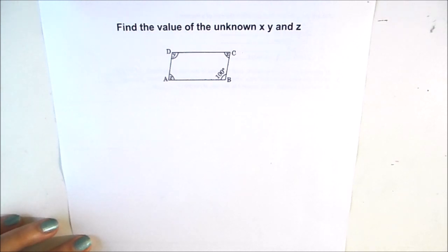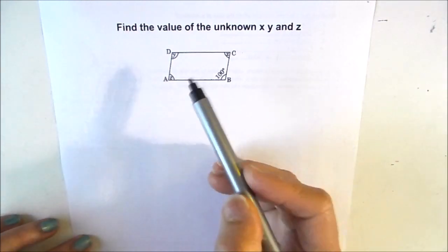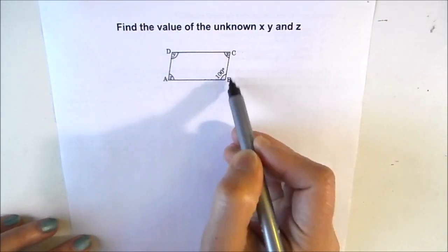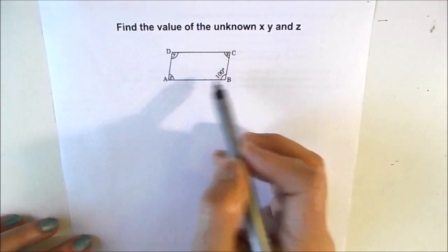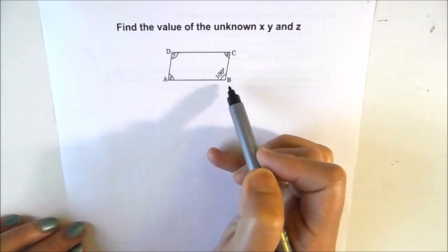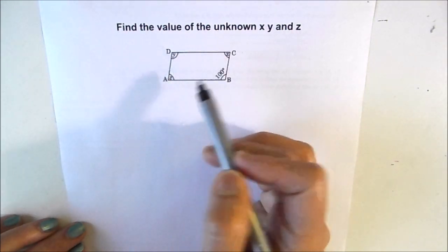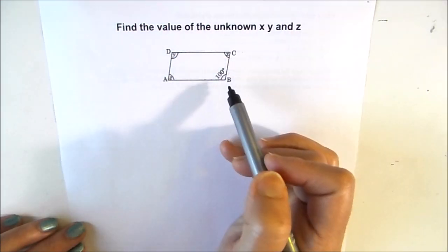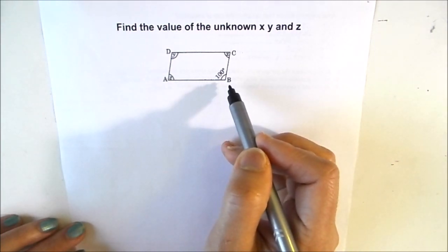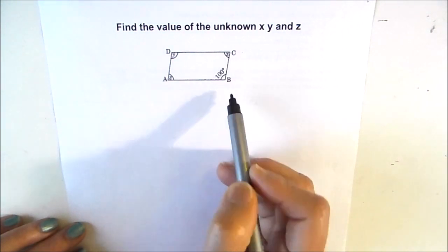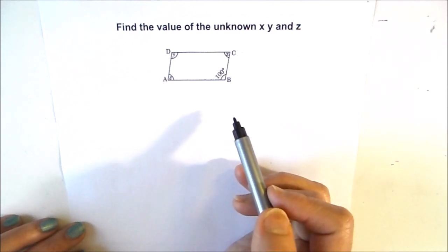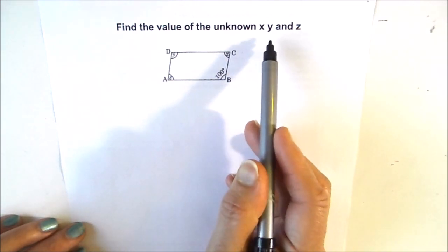First, let us revise the attributes of a parallelogram. We know that a parallelogram has equal pairs of opposite sides, so AD is equal to BC and CD is equal to AB. Also, the opposite angles of a parallelogram are equal, so angle B equals angle D and angle A equals angle C. One more attribute is that the adjacent angles of the parallelogram are supplementary, so the sum of angle A and angle B will be equal to 180 degrees.